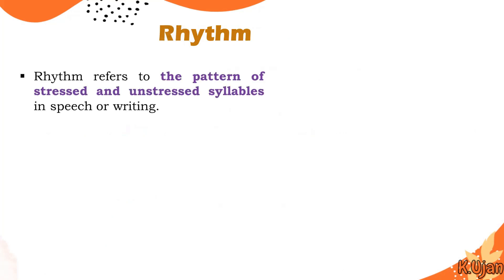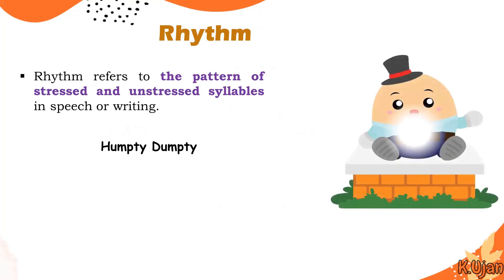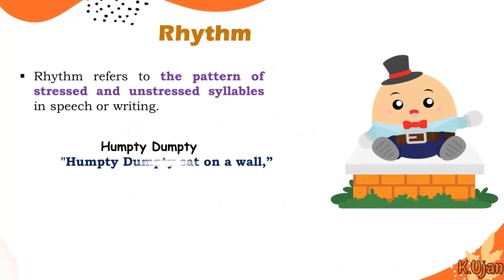Now let's talk about rhythm. Rhythm refers to the pattern of stressed and unstressed syllables in speech or writing. For example, consider the poem Humpty Dumpty. There is a line in this poem: 'Humpty Dumpty sat on a wall.'